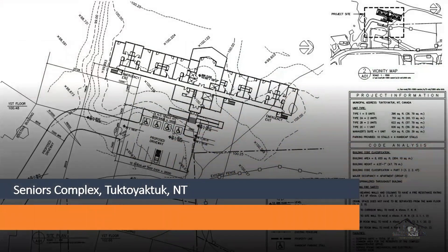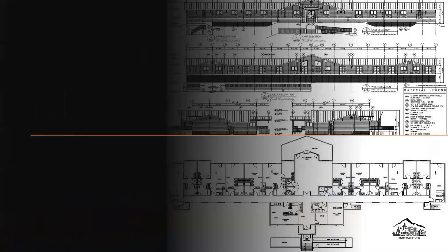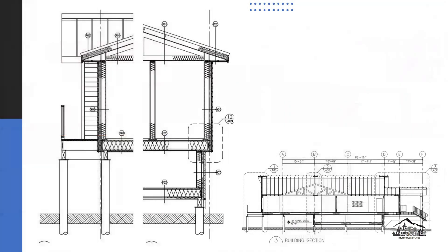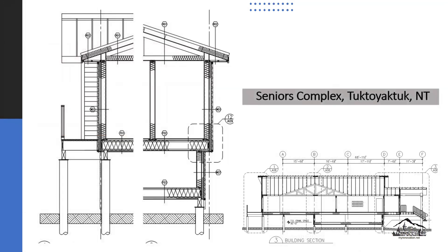Now let's talk about construction along the tree line. In the next slide, I will present some of the construction documents for a senior complex I designed. What you're seeing here is a site plan for this building — this is a vicinity plan and this is a site plan. This is a floor plan and elevation for the complex. This is the building section. Pay attention to how we raise the building: we raise the building above ground level on piles.